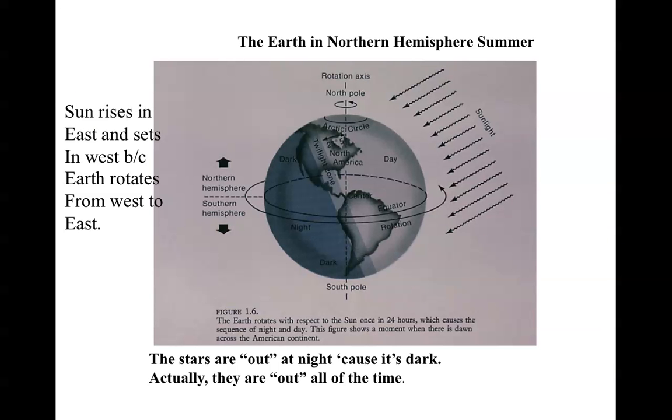What we have is a system where we're sitting on the surface of the Earth. The Earth is turning, and the sun rises in the east and sets in the west because the Earth rotates from west to east. The stars are out at night because it's dark. Actually, the whole celestial sphere is present at all times. But the part we see is on the night side because that's where the sun is not shining and scattering light off the sky that makes it impossible for us to see the stars.